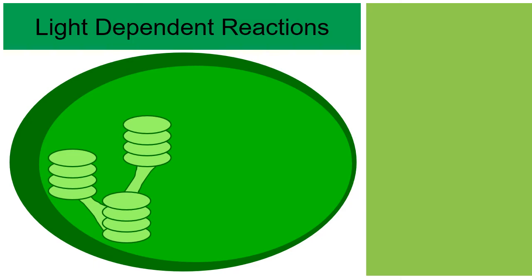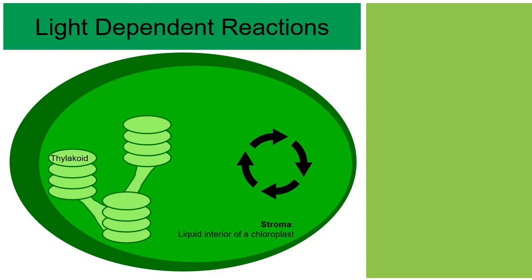Let's identify the parts of a chloroplast. The liquid interior is known as the stroma — much like the cytoplasm of a cell. Inside are structures called thylakoids, which are little disks stacked on top of each other. An entire stack of thylakoids is called a granum. So thylakoids and granum are parts inside a chloroplast.